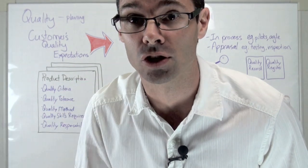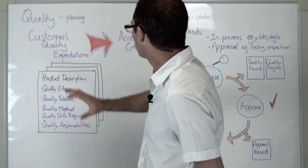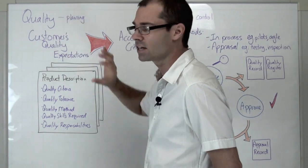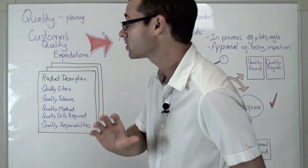Planning, control and assurance. When it comes to planning, we derive the acceptance criteria from the customer's quality expectations during the starting up a project process.